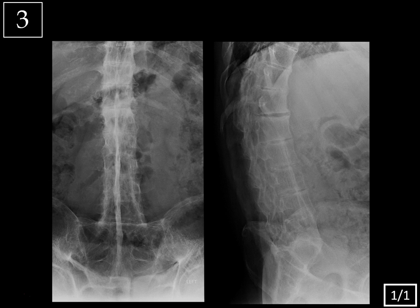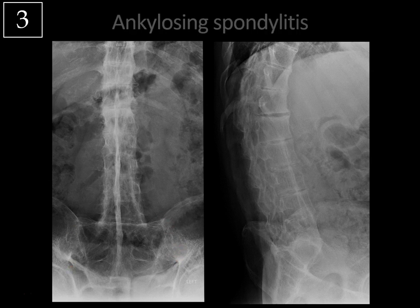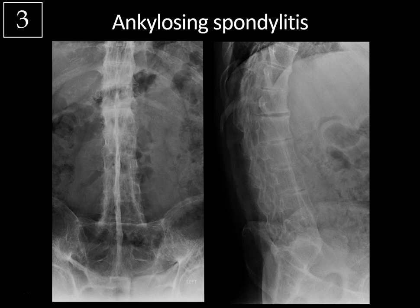Case 3. We have frontal and lateral views of the lumbar spine with two important findings. There is a linear ossification along the midline of the spine, and symmetric fusion of the sacroiliac joints to the point where they're barely detectable. This combination is typical for ankylosing spondylitis — a seronegative spondyloarthropathy, a chronic inflammatory disease of unknown etiology that primarily affects the spine, resulting in fusion or ankylosis of the spine and sacroiliac joints. Usually the first manifestation is sacroiliitis, typically symmetric and bilateral, with initial widening of the joint space followed by ankylosis.